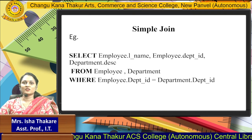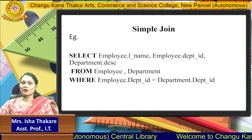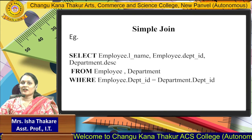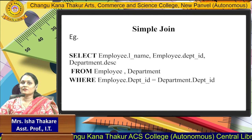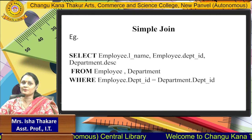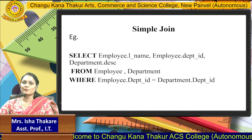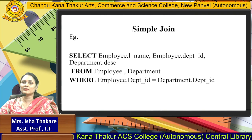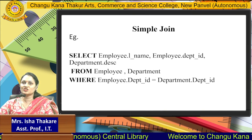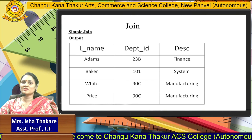The query for joining the two tables is: SELECT employee1.name, employee.deptid, and department.desc FROM employee, department WHERE employee.deptid equals department.deptid. Here, LName and DEPT_ID are fields from the employee table, while DESC is a field from the department table. This join condition uses the common field department ID. The output for the table is LName, DEPT_ID, and DESC.